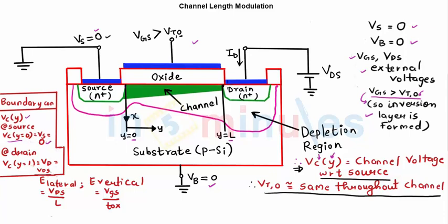At drain, Y equal to L, it's at drain. VC equal to is nothing but drain voltage, but I can easily say drain voltage is nothing but VDS, because VDS is nothing but VD minus VS, and source is zero, so it's nothing but VD. So these are my two boundary conditions.